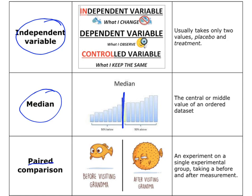Paired comparison. As you can see in the little picture, there's a picture of the fish before visiting grandma and after visiting grandma. A paired comparison means the same fish has had two tests done — we tested the fish before visiting grandma and after visiting grandma. So it's two tests done on the same experimental unit or participant.